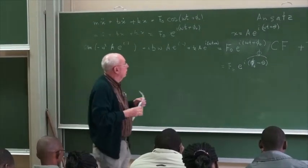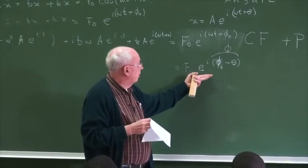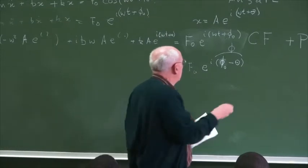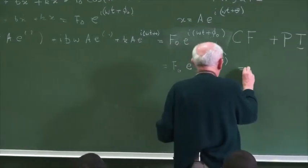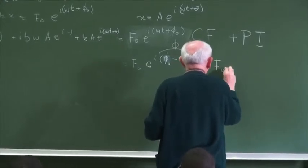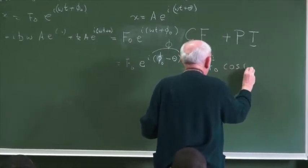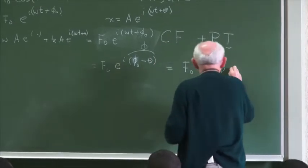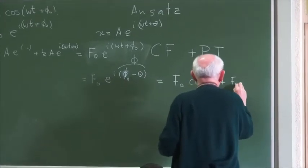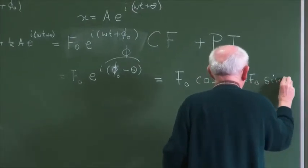We can now write the real and imaginary parts. The real part is F zero cosine φ and the imaginary part is F zero times i sine φ. Separating real and imaginary parts of the equation gives us two equations to work with.